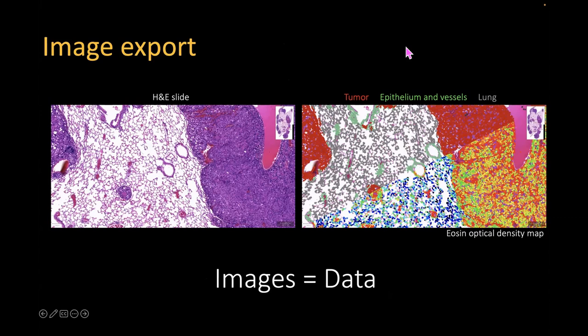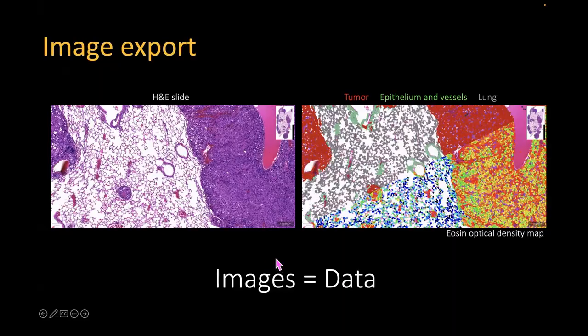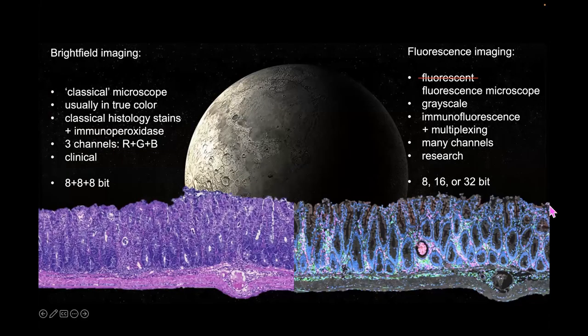Just to reiterate: your images or data, if you tweak them nicely, can give you a lot of information about your samples. There are generally two kinds of images we will be interacting with. There are classical images composed of three channels — red, green, blue — they are often used in the clinical world.